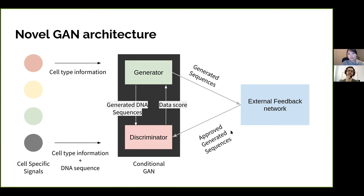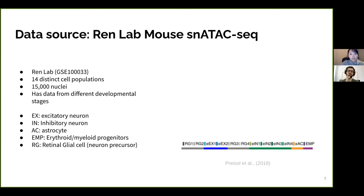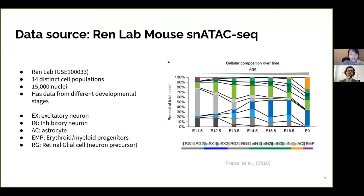There's an external feedback network that helps the GAN train after a certain number of epochs. To test my model, I used the Bhren Lab mouse data — mouse forebrain single-nucleus ATAC-seq from E11.5 all the way to postnatal day zero. There are several cell types: RGCs (radial glial cells, precursors for neurons), excitatory neurons in blue, inhibitory neurons in green, and astrocytes in orange.